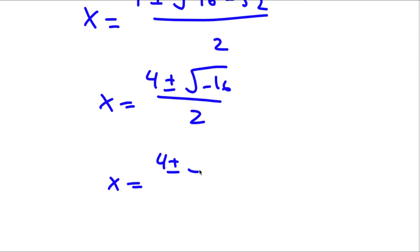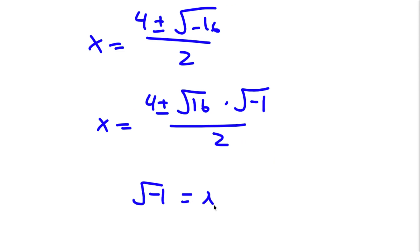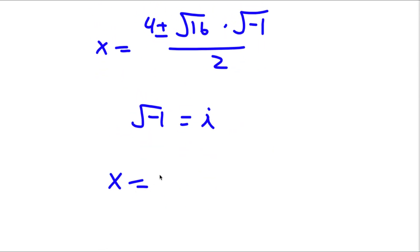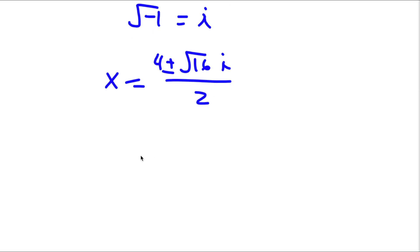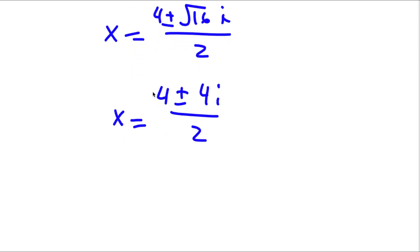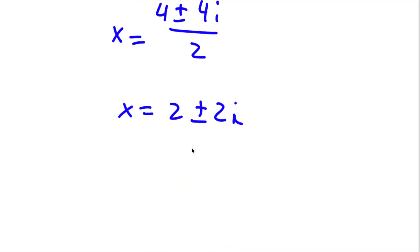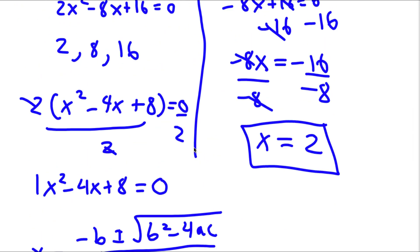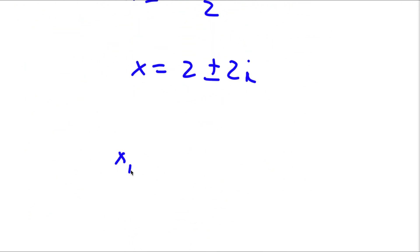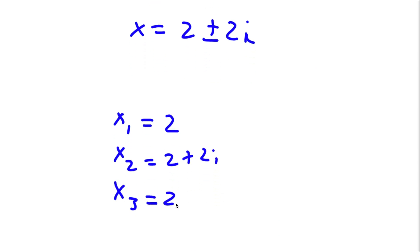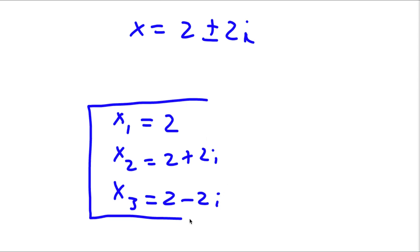I can rewrite the square root of negative 16 as the square root of 16 times the square root of negative 1. Since the square root of negative 1 is the imaginary number i, I have x equals 4 plus or minus 4i, over 2. Dividing by 2 gives x equals 2 plus or minus 2i. So my three solutions are x equals 2, x equals 2 plus 2i, and x equals 2 minus 2i.